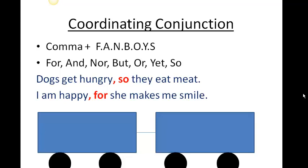Coordinating conjunctions. When you use a coordinating conjunction, you add a comma and a FANBOY. FANBOY stands for: for, and, nor, but, or, yet, and so. Let's take a look at an example. 'Dogs get hungry, comma, so they eat meat.' Another example: 'I am happy, comma, for she makes me smile.' In both cases, I've connected two independent clauses with a coordinating conjunction.